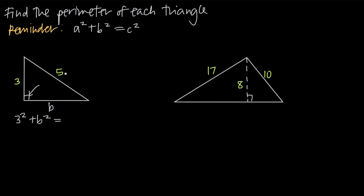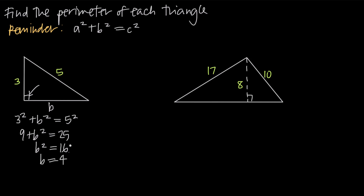We know that the length of the hypotenuse is five. c is always the hypotenuse, so we go ahead and plug in five for c. When we simplify, we're going to get nine plus b squared is equal to 25. When we subtract nine from both sides, we get b squared is equal to 16. And when we take the square root of both sides, we get b is equal to four.